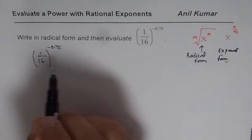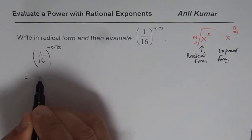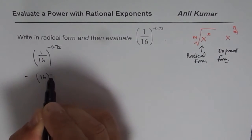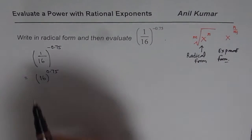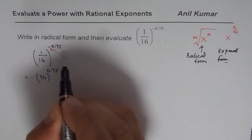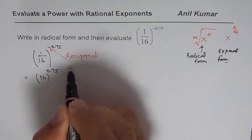We could actually take care of negative sign by making it reciprocal. So, it becomes 16 to the power of 0.75. That could be the first step. Negative power means reciprocal.